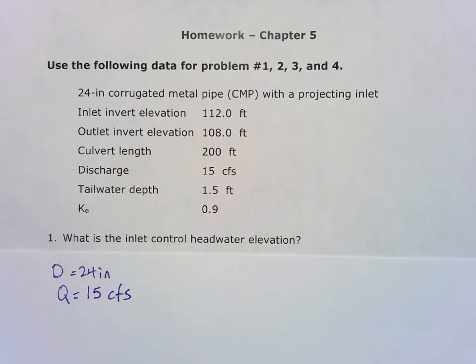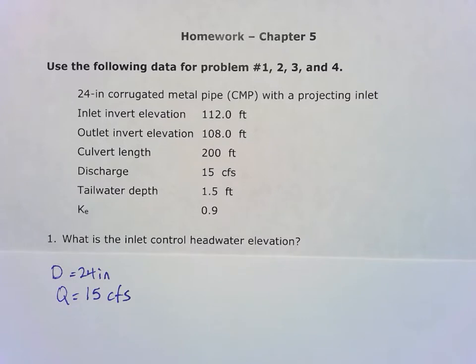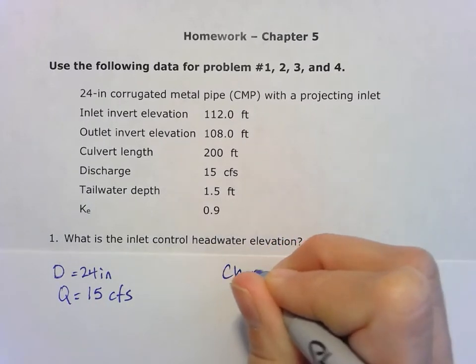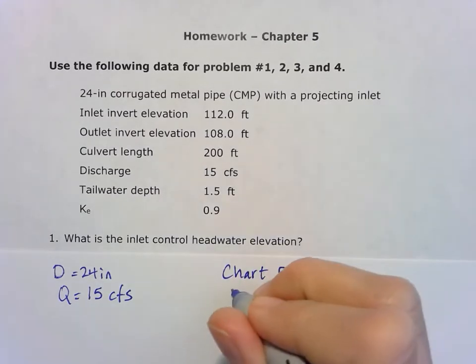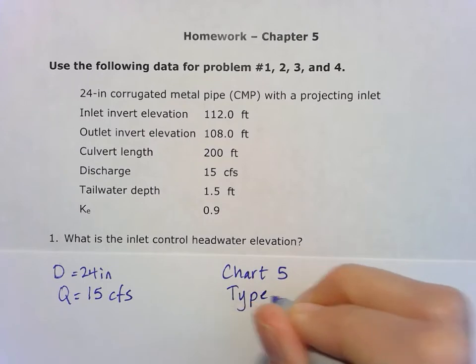We connect those two points on the chart to find the headwater depth in diameters. We need to make sure we're using the right chart. Since we have a 24-inch corrugated metal pipe, that will be chart five. We also need the right entrance type - we have a projecting inlet.